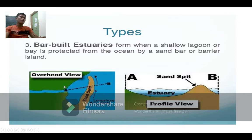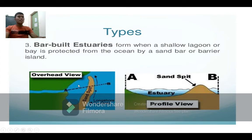Look at the picture — the overhead view. This is the river. Notice that there is a sand spit here — soil or sand that has eroded and formed a barrier, creating a lagoon. This is the estuary. It is called a bar-built estuary because there is a sandbar blocking here.